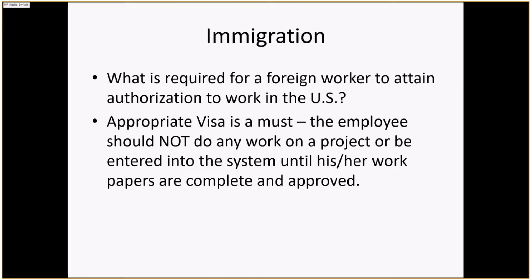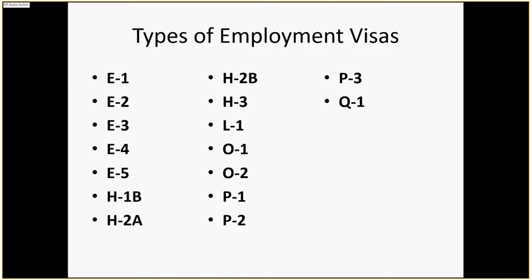From an immigration standpoint, you need to understand what's required for a foreign worker to attain authorization to work within the US. You need to have the appropriate visa. The employee should not do any work on a project or be entered into the system until their work papers are complete and approved — and that is an absolute. There is a whole alphabet soup of different employment visas: E1, E2, E3, E4, E5, H1B, H2A, H2B, H3, L1, O1, O2, P1, P2, P3, Q1.